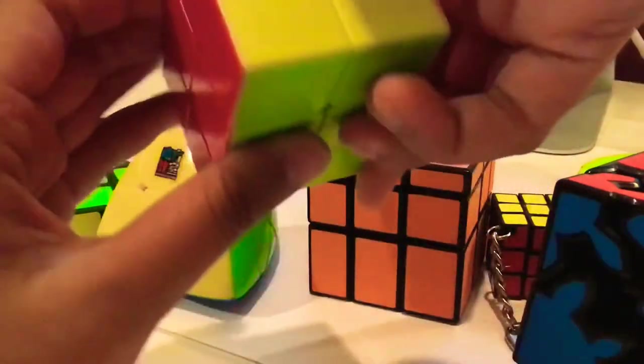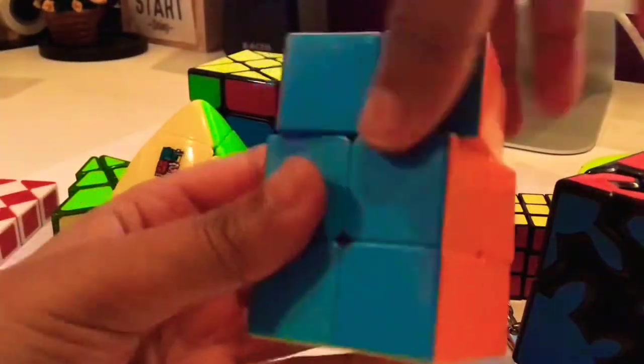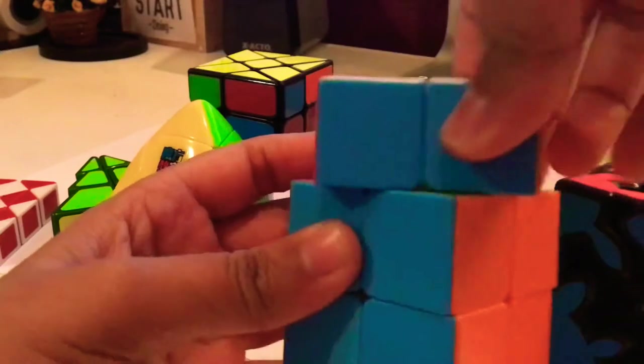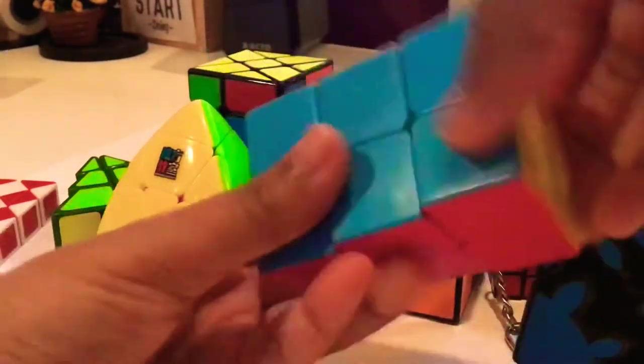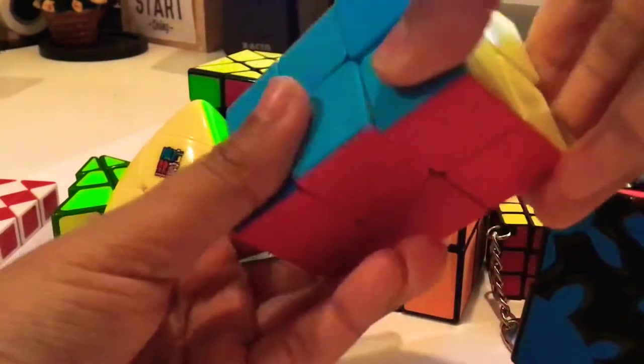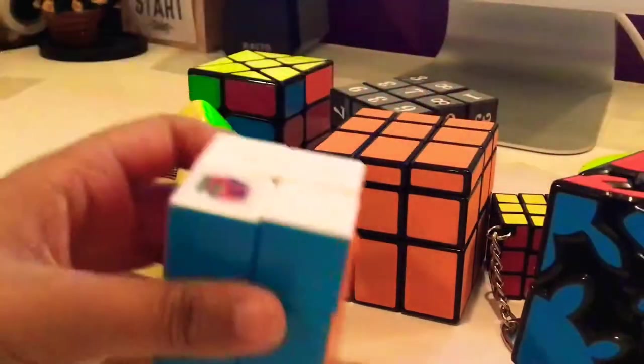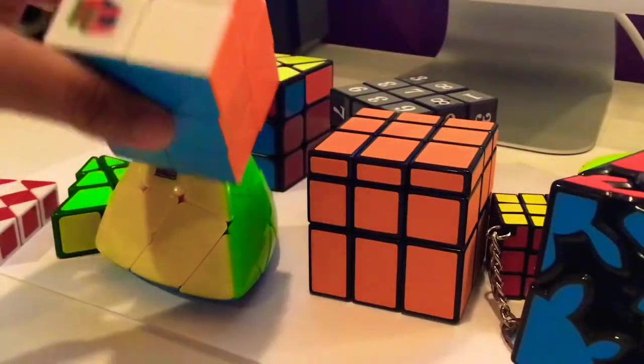Next up I have this Lefun 2x2x3 shape mod or cuboid. The turning is really good and I'm pretty sure it's as good as a QiYi cuboid. So yeah, the color shades are also really nice on here and it's a stickerless puzzle.